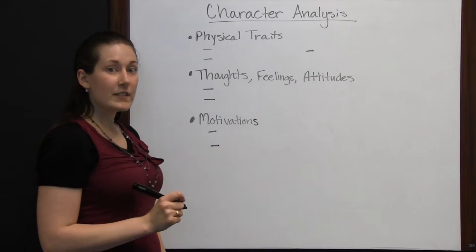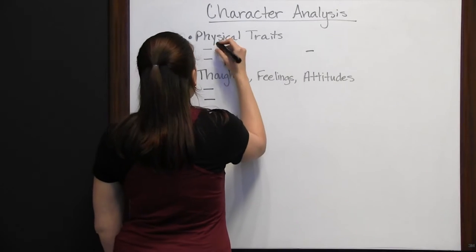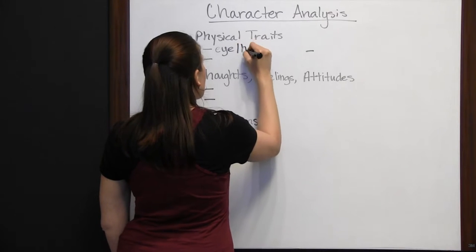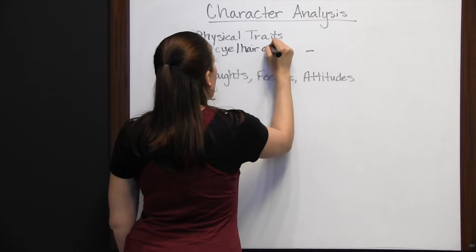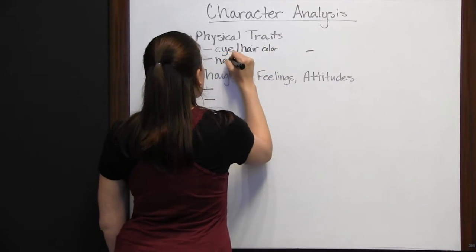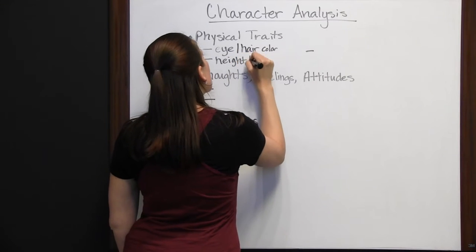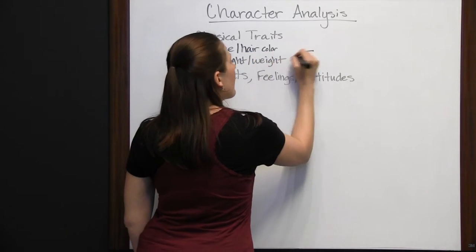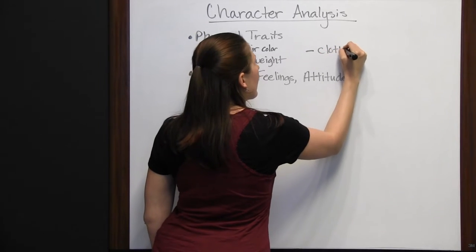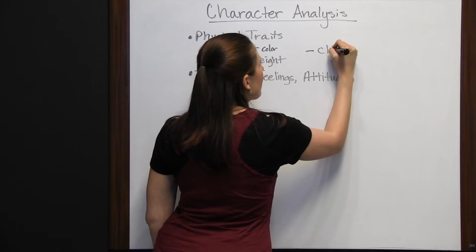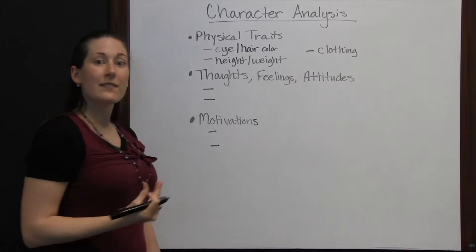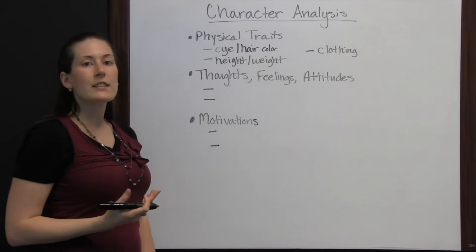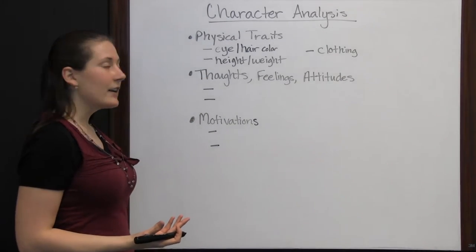A character's physical traits could include their eye and hair color, their height, weight, or their clothing. These are just a few examples. You could think of a lot more things to physically describe that character, but their physical traits are important when you're analyzing the character.